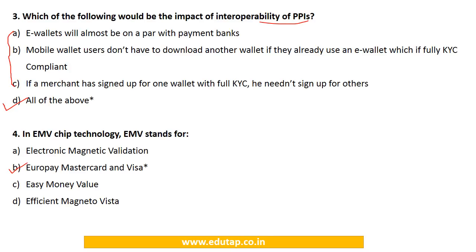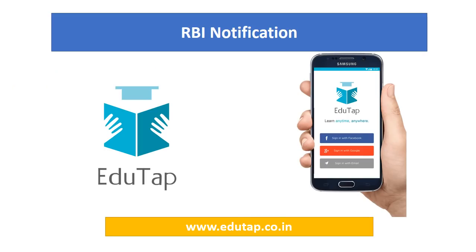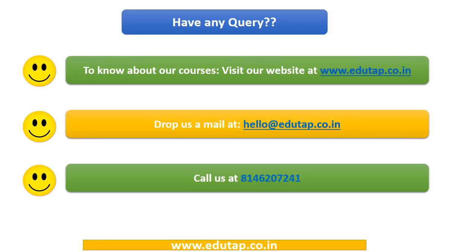Question 4: In EMV chip technology, EMV stands for: (A) Electronic Magnetic Validation, (B) Europay Mastercard and Visa, (C) Easy Money Value, or (D) Efficient Magneto Vista. As discussed, EMV is an acronym for Europay, Mastercard, and Visa, as they developed this technology. The answer is option B.